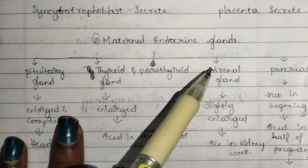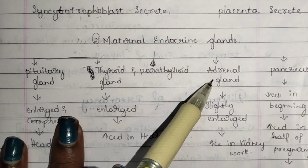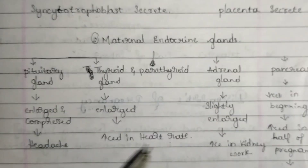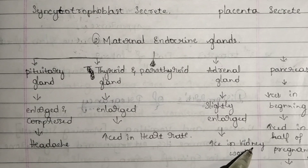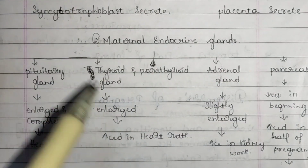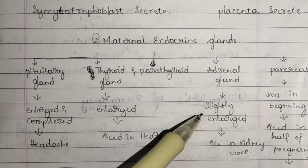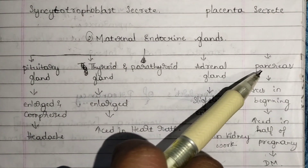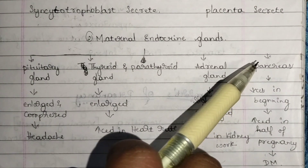Next, the adrenal gland. The adrenal gland is present above the kidney, and this gland will be slightly enlarged. Because of this enlargement, there is a chance of increase in workload — the workload is already increased and this is also a reason for that increase.